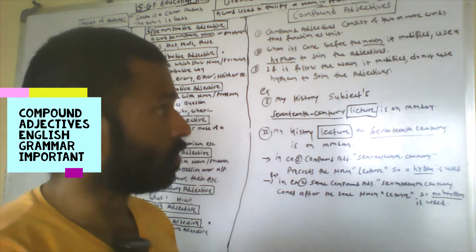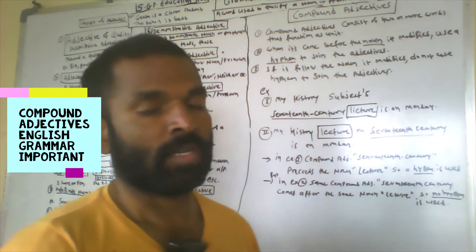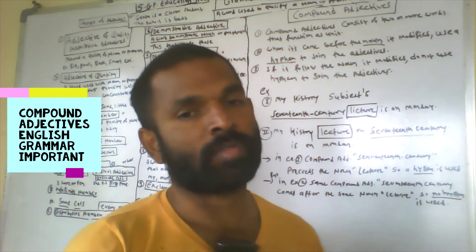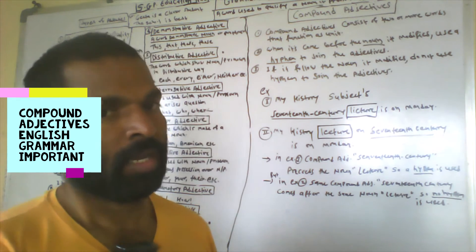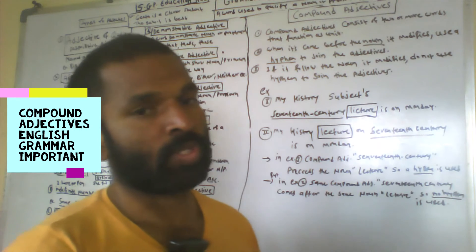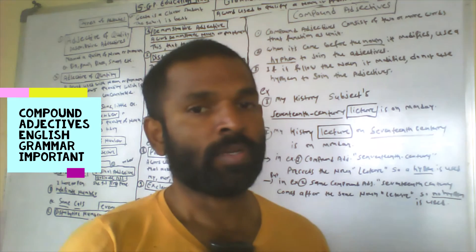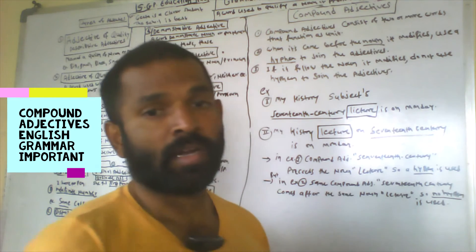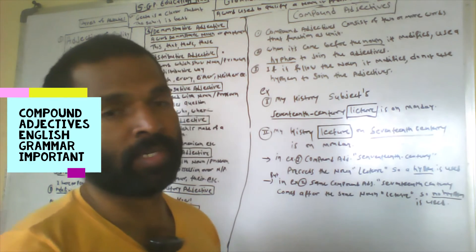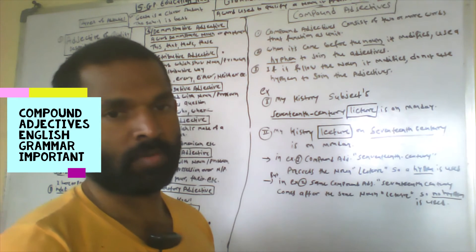So, when two or more adjective words come in one sentence as a unit, that unit is called a compound adjective. There are two processes to place the adjective in a sentence: if the adjective comes before the noun it is going to modify, then the adjectives are joined with a hyphen.